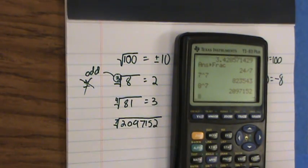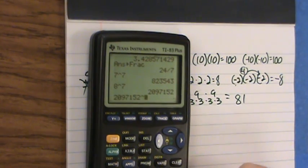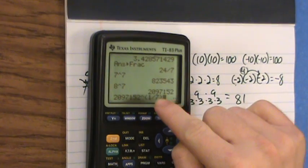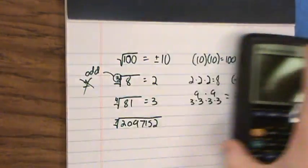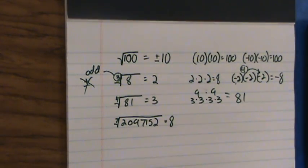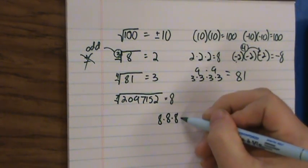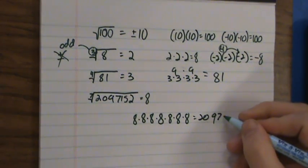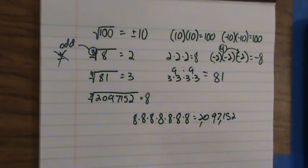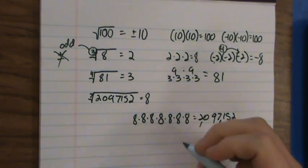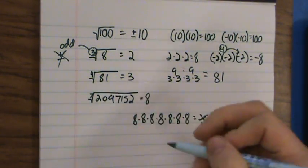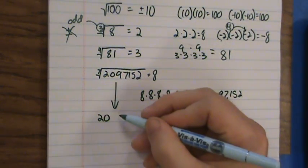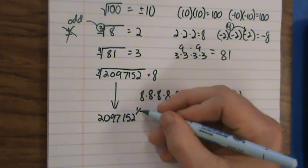The number we want to evaluate the seventh root of is two million ninety-seven thousand one hundred fifty-two. I'm going to enter that into my calculator. Anytime you want to find the nth root, you raise it to the one-over-n power. I want the seventh root, so I raise it to the one-seventh power, and I find that's eight. So eight times itself seven times equals two million ninety-seven thousand one hundred fifty-two. We could also write it as two million ninety-seven thousand one hundred fifty-two raised to the one-seventh power.